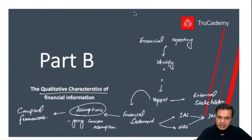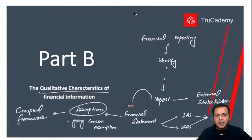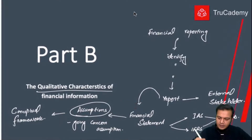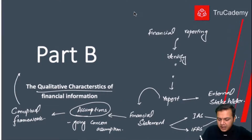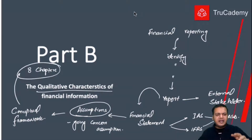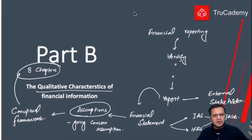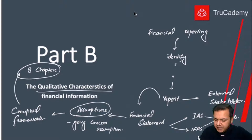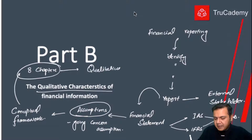When we talk about the conceptual framework, it basically has 8 chapters. At the F3 level, it is not necessary to know all the details of every chapter, but one chapter is very relevant at this level — the one that provides information about qualitative characteristics of financial information.